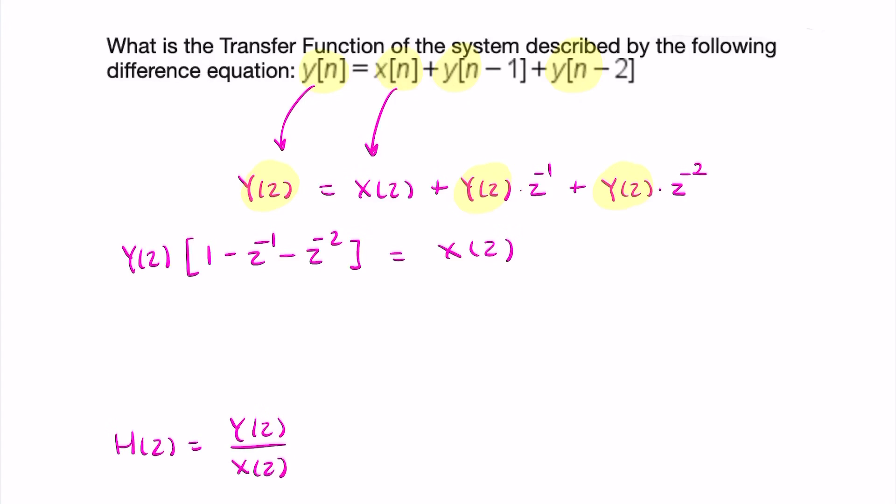So I can now find y of z divided by x of z is 1 over 1 minus z to the minus 1 minus z to the minus 2. And that's exactly what I was after. That's my transfer function.